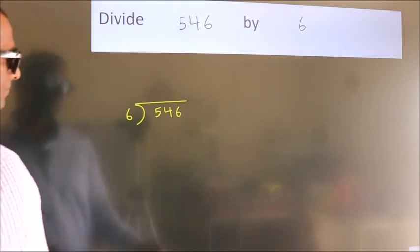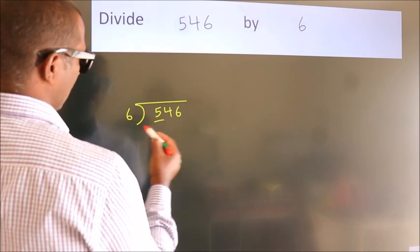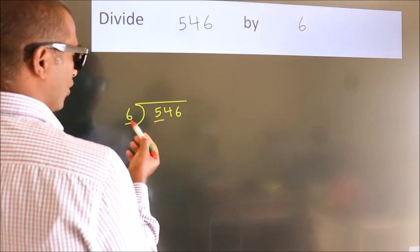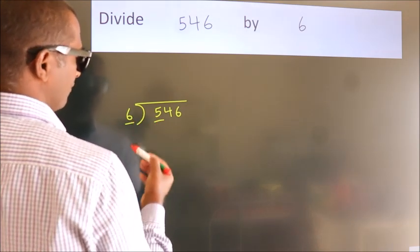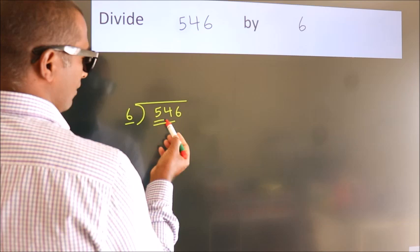Next, here we have 5, here 6. 5 is smaller than 6, so we should take 2 numbers: 54.